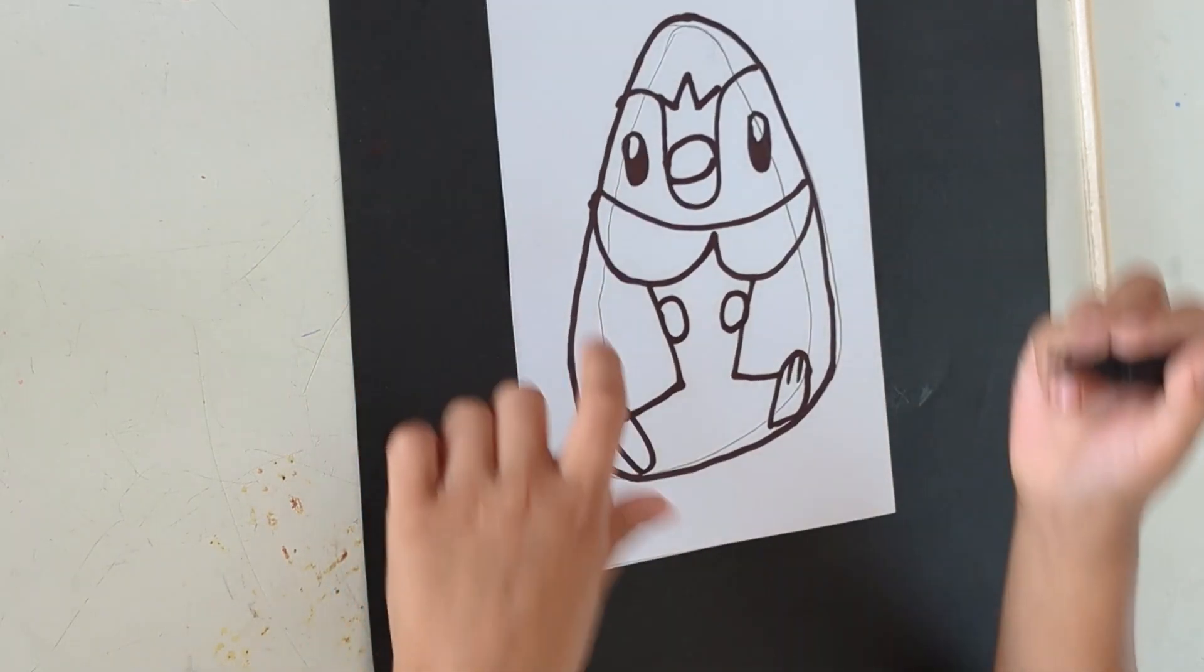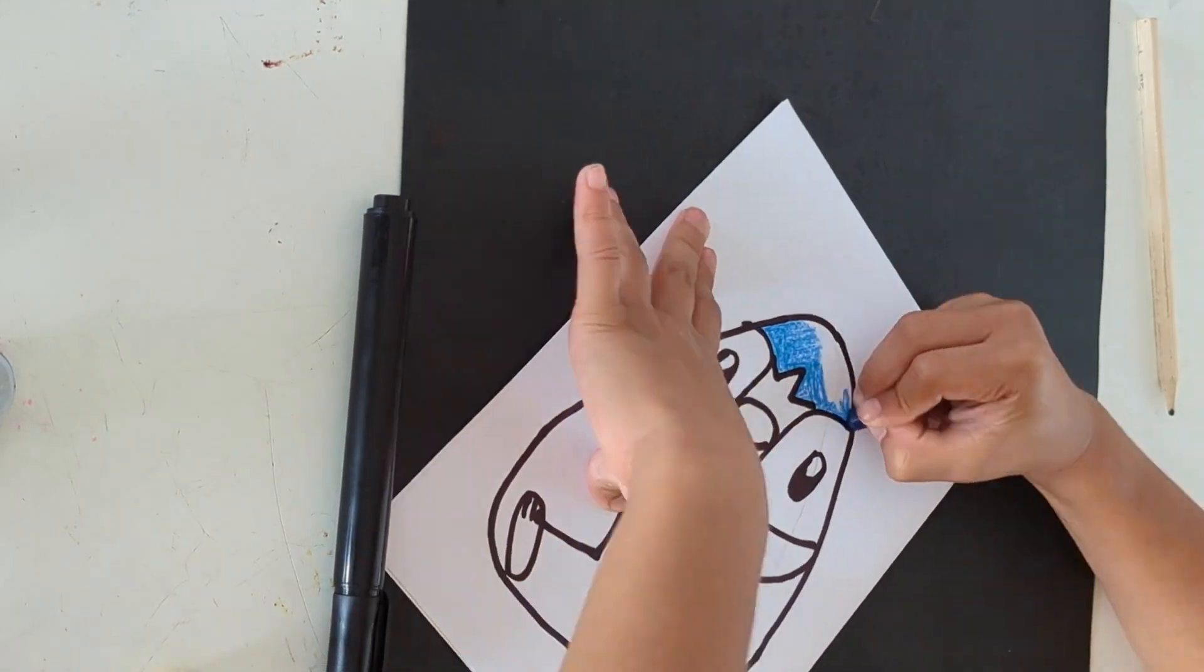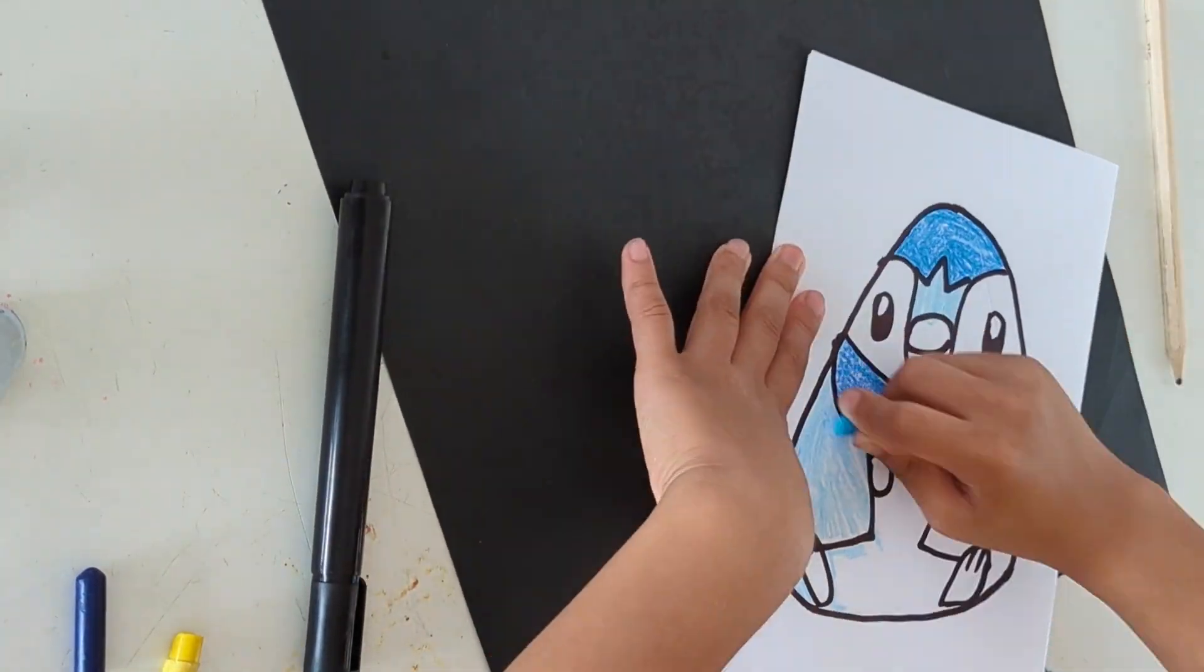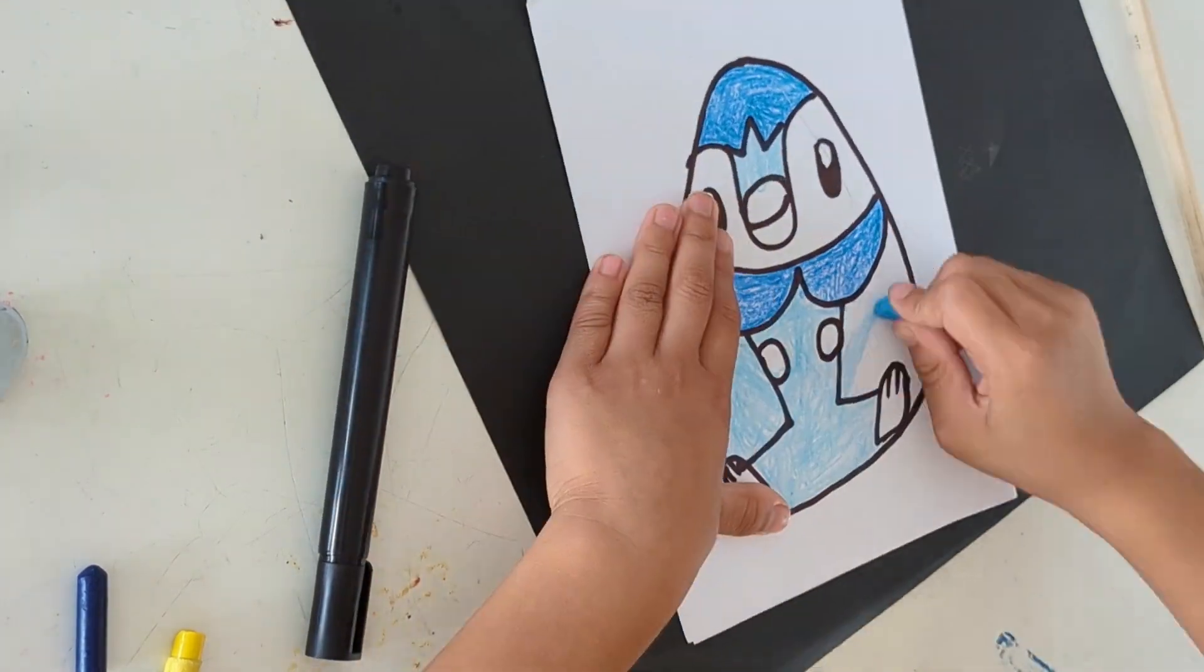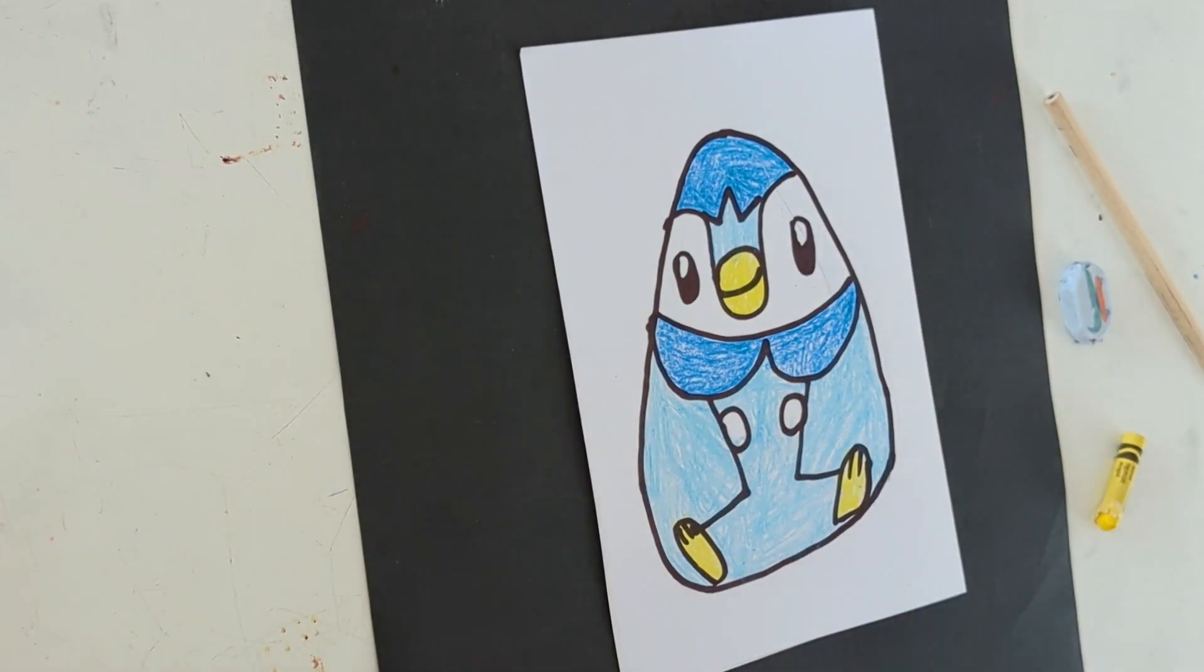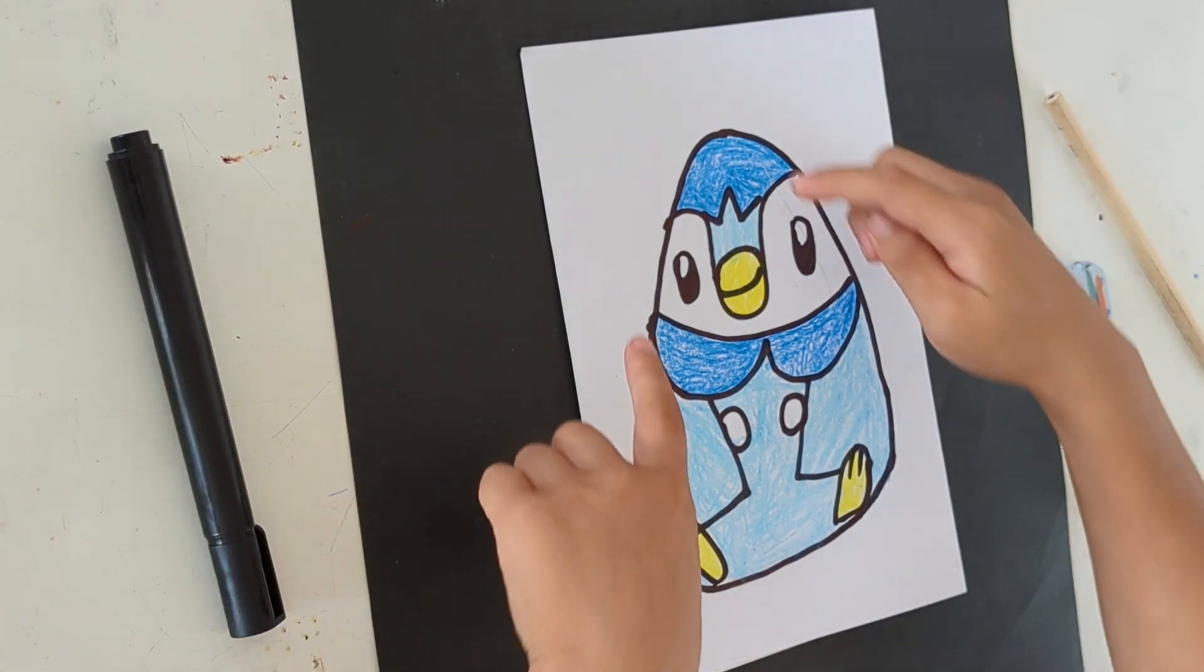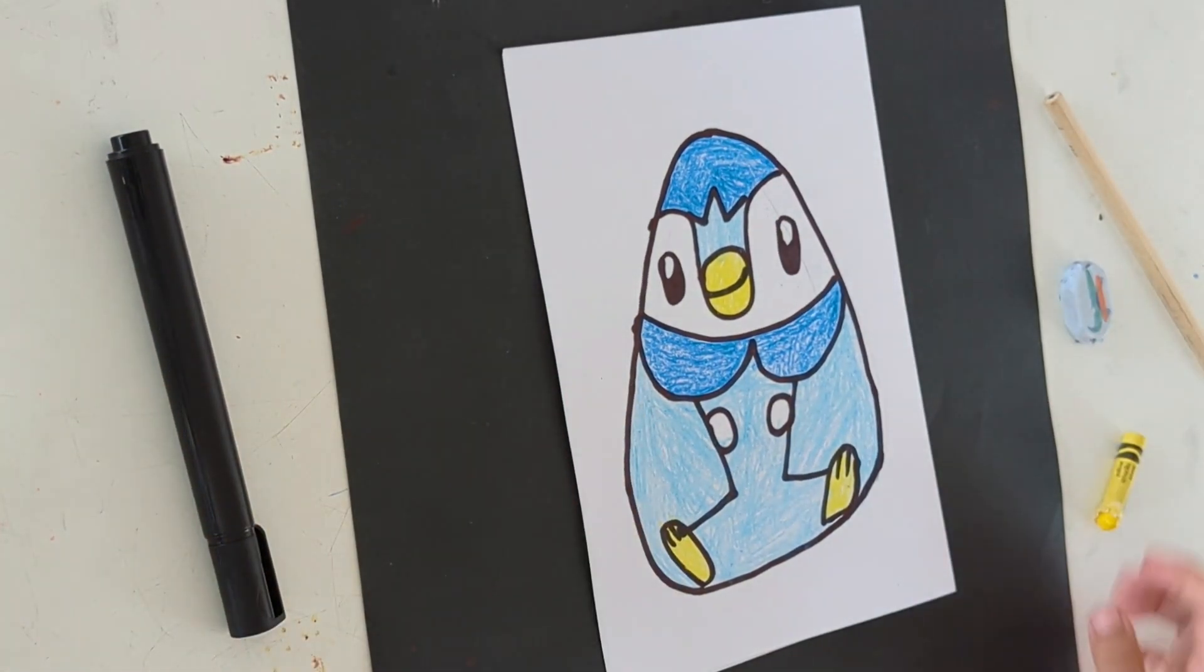Now let's color it in. You may have noticed that I used the eraser to erase the pencil lines. To make it a bit more realistic.